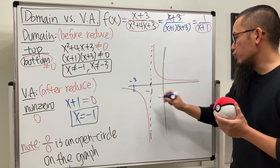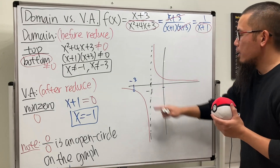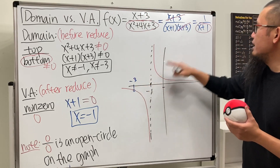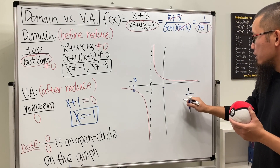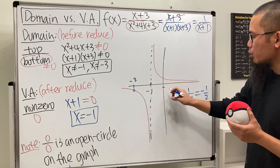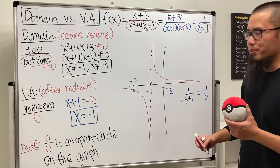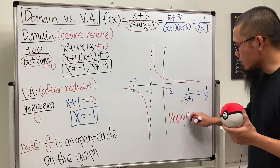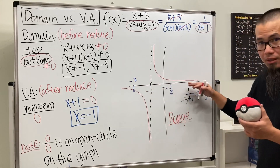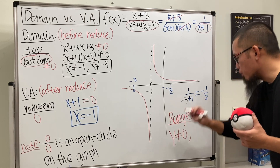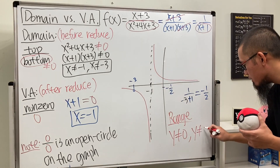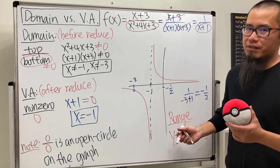It's also useful to find the y-value of the open circle. To do that, plug x = -3 into the reduced form — not the original, since that gives 0/0. So we get 1 over (-3 + 1) = 1 over -2 = -1/2. The open circle is at y = -1/2. This also tells us about the range: y cannot be zero, and y cannot be -1/2 because that point is missing. The range is usually the trickiest, so always determine it after you have the graph.